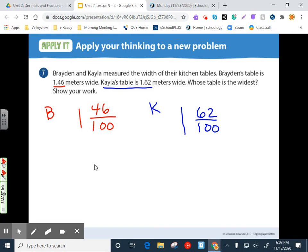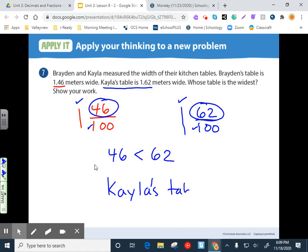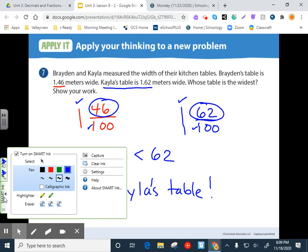Okay. Whose table is the widest? Show your work. Well, we can do that pretty easily. Our whole numbers are the same. So then we look at our denominators are the same. So that checks out. So all we have to do is look at these. Compare these two numbers. I know forty six is less than sixty two. Which means Kayla's table is the larger table.